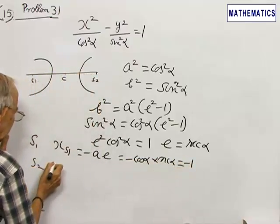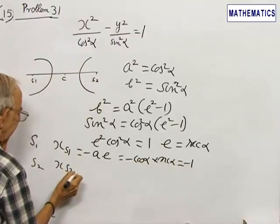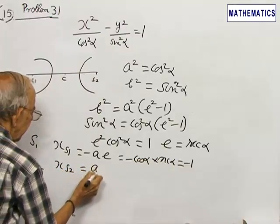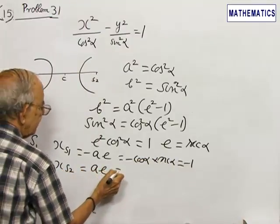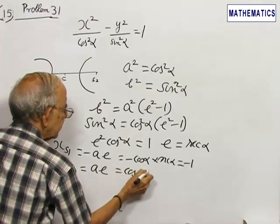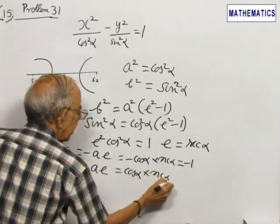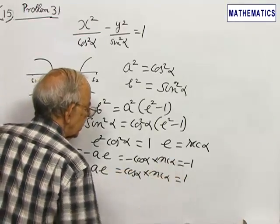So the x-coordinate of the foci S2 is plus a e, cos alpha into secant alpha, equal to 1.